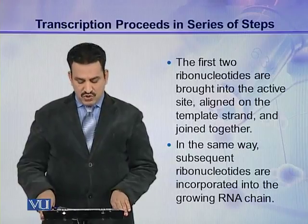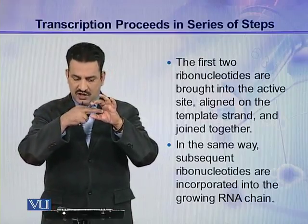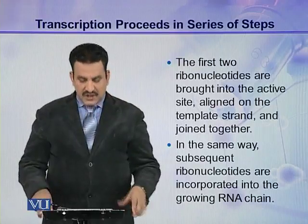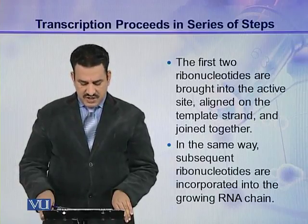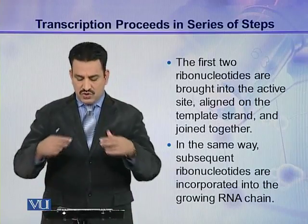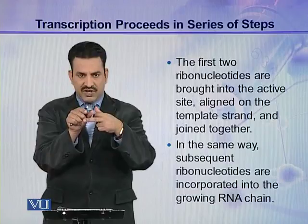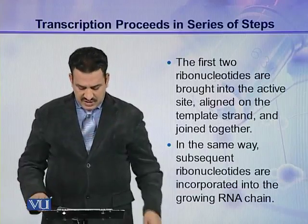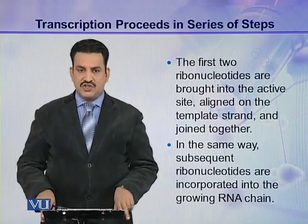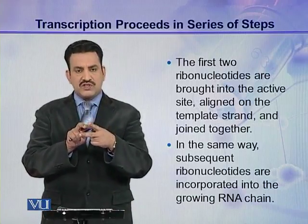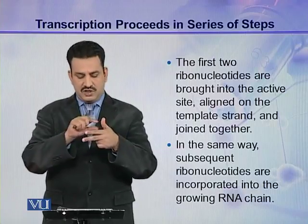The first two ribonucleotides are brought into the active site of the RNA polymerase — the active site is the cleft in the center of the claw-like structure. These two ribonucleotides align on the template strand and are joined together. In the same way, subsequent ribonucleotides are incorporated into the growing RNA chain, with new nucleotides continuously entering and joining the existing RNA chain.